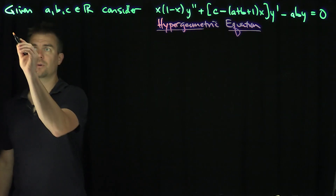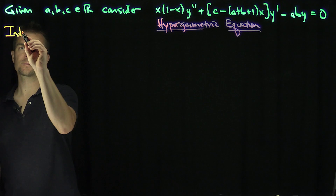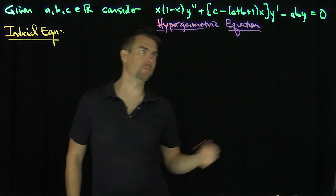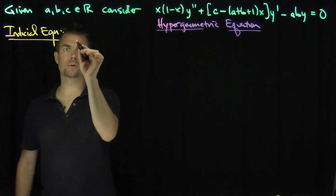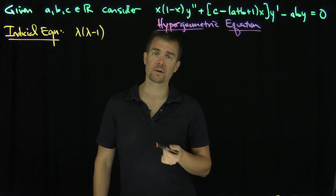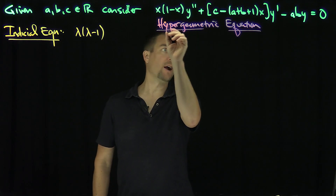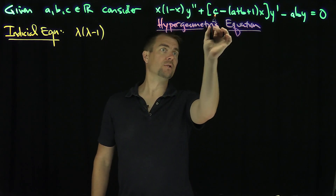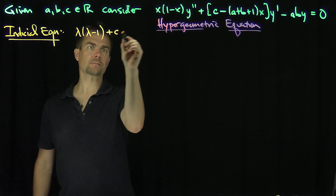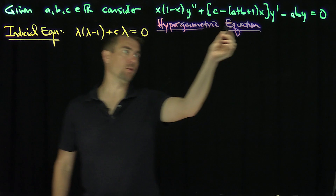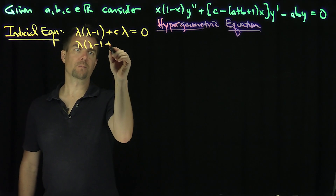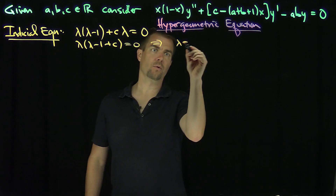What we're going to do now is write down the indicial equation using the method of Frobenius. Since I have a c in my problem, I'm going to use lambda as my indicial variable instead. So the indicial equation is lambda times (lambda minus 1) plus p0 times lambda equals 0, where p0 is the coefficient of 1/x in the expansion of the p term, which gives us c. There is no q term since there's no x squared term, so the indicial equation is lambda times (lambda minus 1 plus c) equals 0.